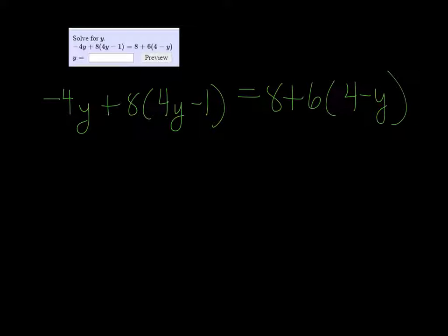All right, the problem is -4y + 8(4y - 1) = 8 + 6(4 - y).